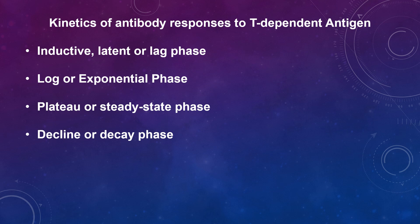Then there is a plateau or steady state phase, in which antibody synthesis is balanced by antibody decay so that there is no net increase in antibody concentration. There is also a decline or decay phase, in which the rate of antibody degradation exceeds that of antibody synthesis and the level of antibody falls. Eventually, the level of antibody may reach baseline levels.